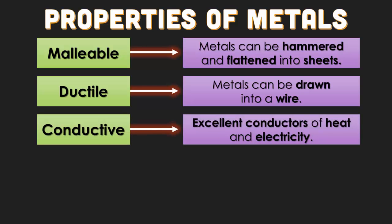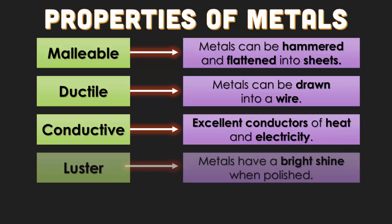Metals are also highly conductive, hence why they are great at sending heat or electrical energy throughout them — which is why you don't want to put them in the microwave. If you put metal in a microwave, you'll see electricity in the form of lightning occurring inside the microwave, and somebody at home will probably get really mad at you.